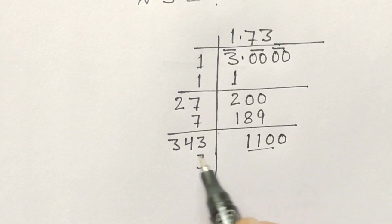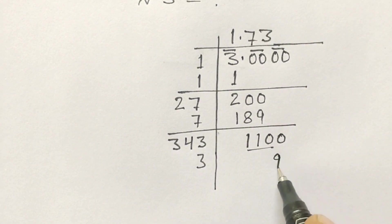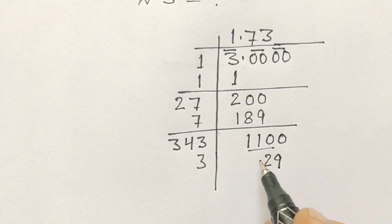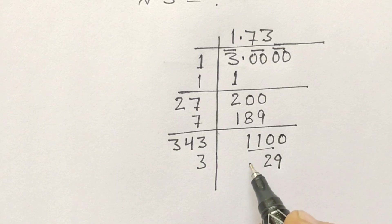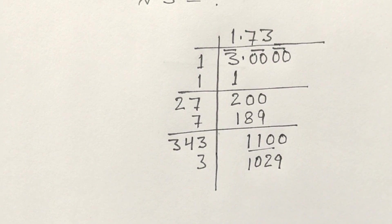So 343 multiplied by 3, we will write here. 3 times 3 is 9, 3 times 4 is 12, 3 times 3 is 9, and 1 carry, so this will be 1029.